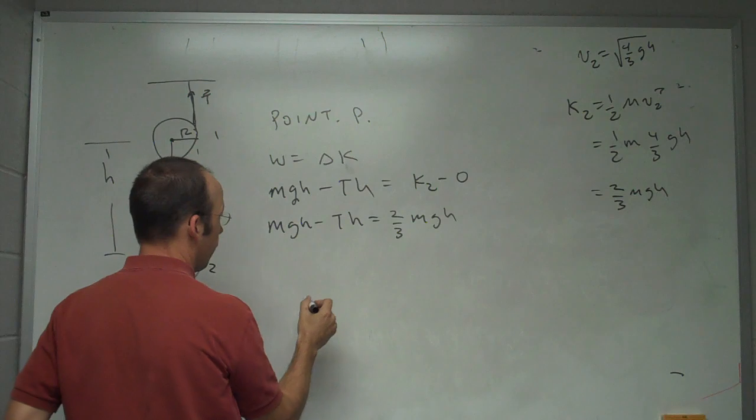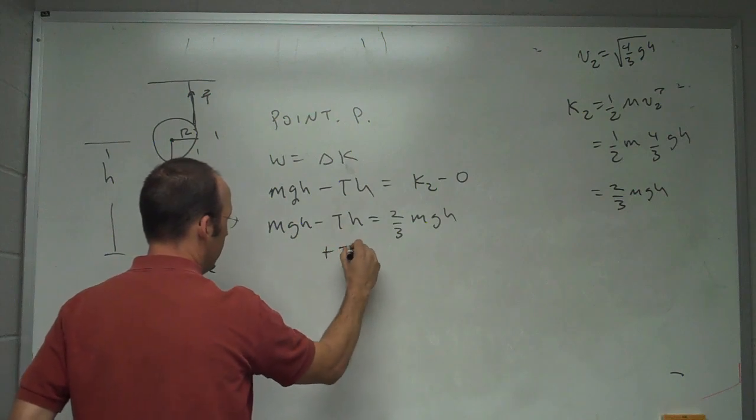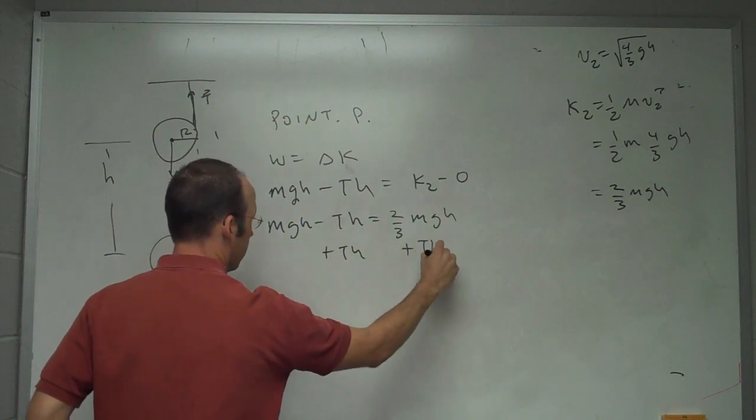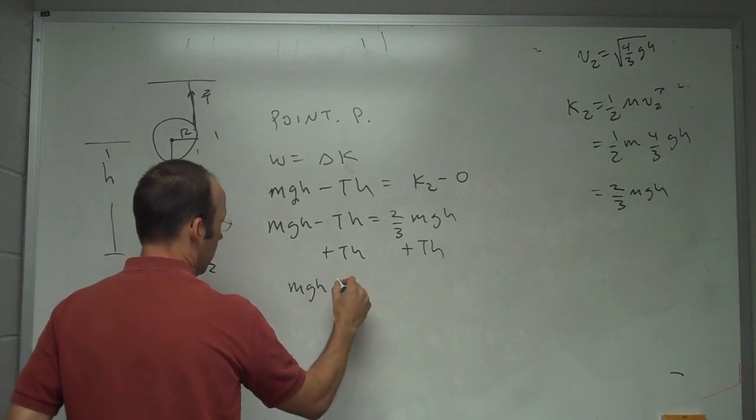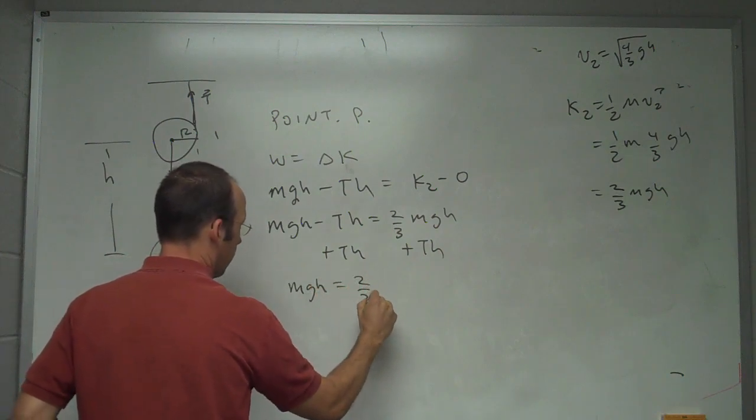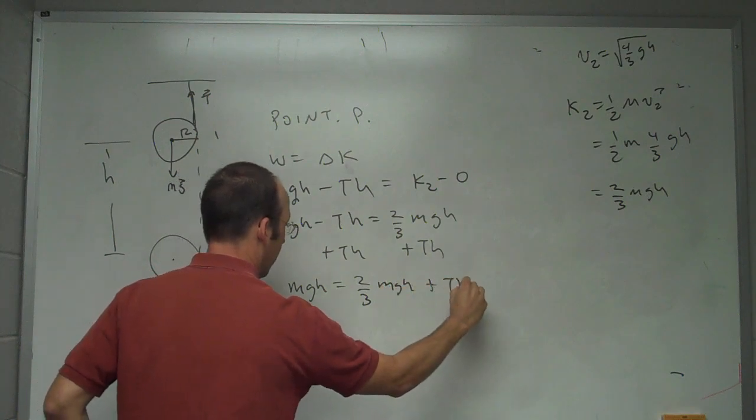So now I want to solve for T. I'm going to add Th to both sides. And then I'm going to get mgh equals two-thirds mgh plus Th.